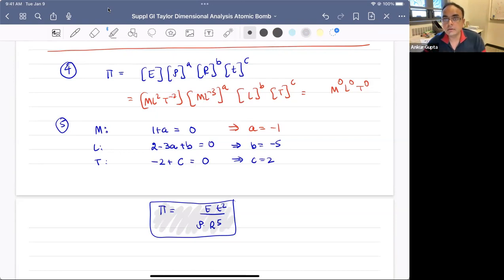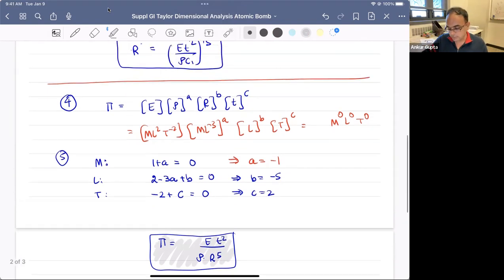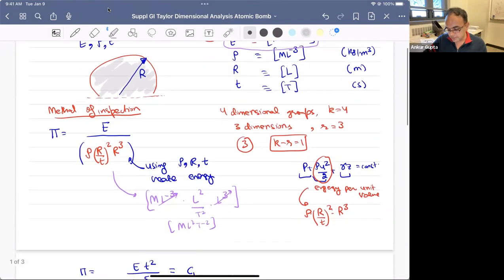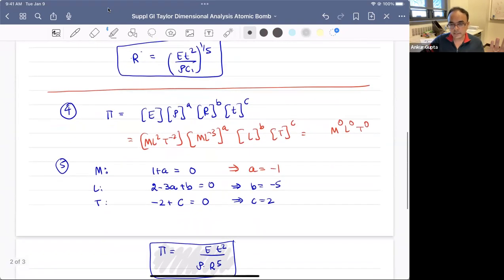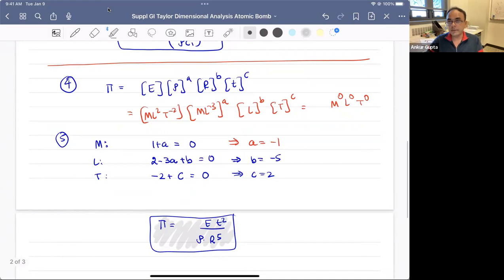So hopefully this was a good example for you to see the power of dimensional analysis and an example of how we can find just by using dimensional analysis dependencies of how radius is a function of time, density, energy, and so on, and using both the methods. So look forward to seeing the next video. I hope this video was helpful.